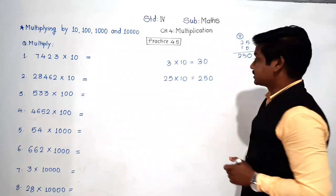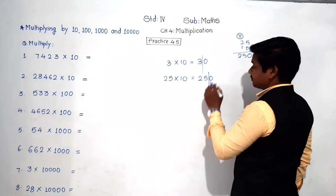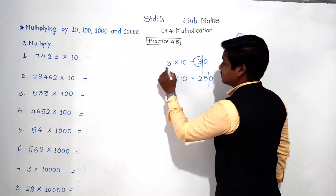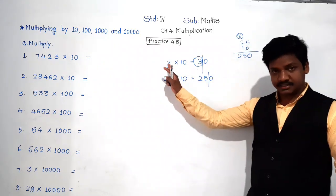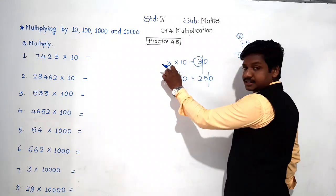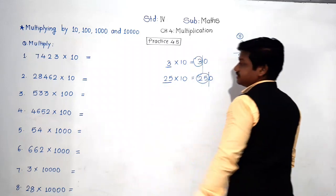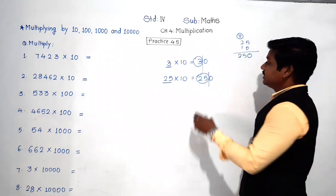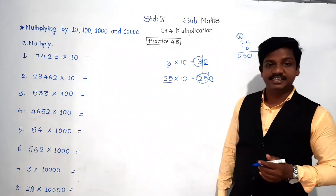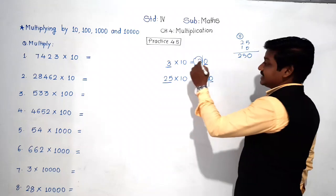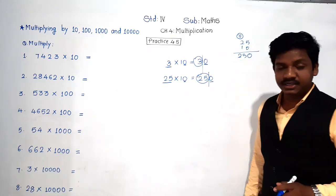We can divide each answer into two parts: a zero part and the remaining part. In 30, the remaining part is 3, which is nothing but the original number. In 250, the part 25 is nothing but the first number we multiplied. And notice — in ten there is one zero, and in both answers there is one zero at the end.